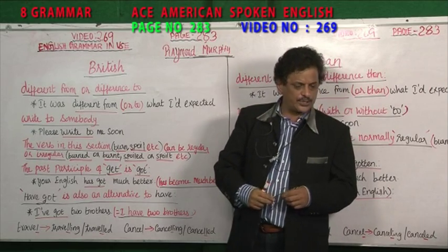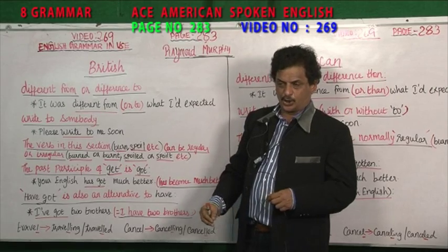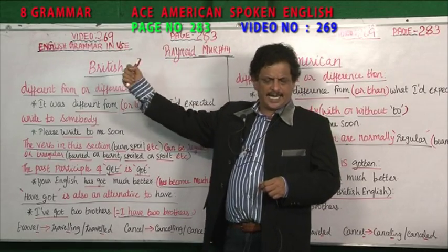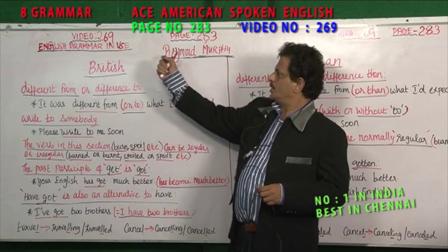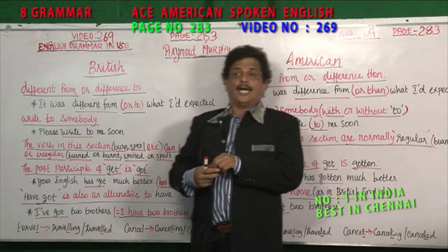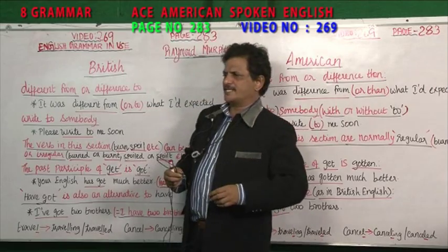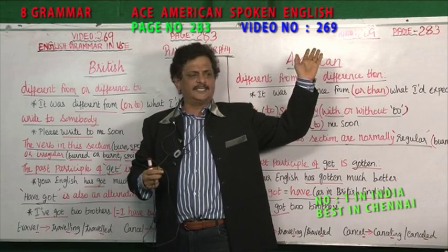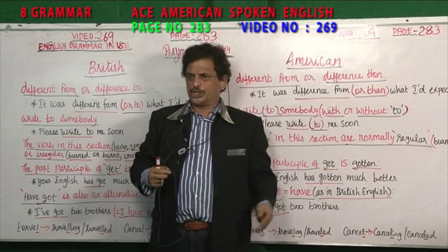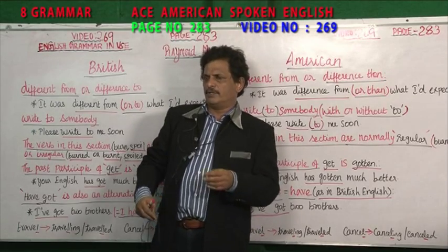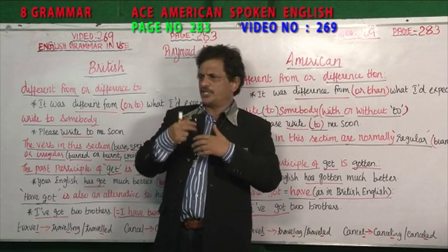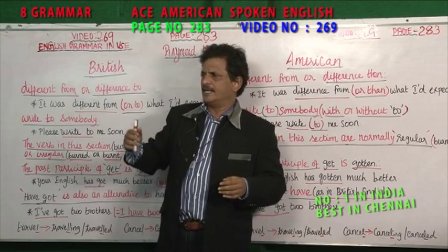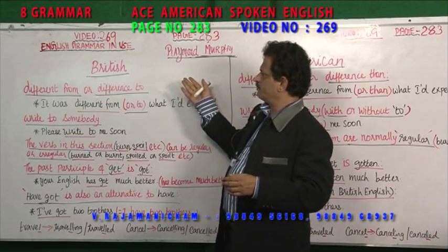The end chapter is the difference between British English and American English. British English originated in England, so it is British English. The English has been exported — when Britishers captured America, it became the main language over there, and entire Americans started speaking in English. With a lot of changes, it is now called American English, categorized separately and different from British English.